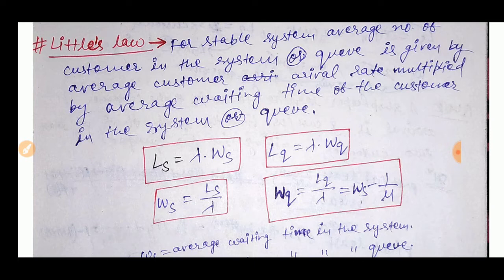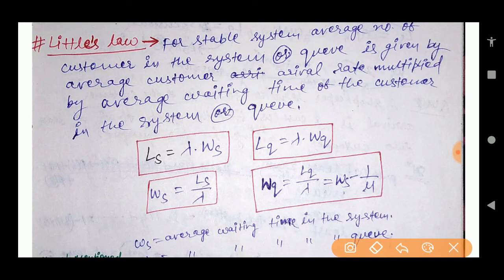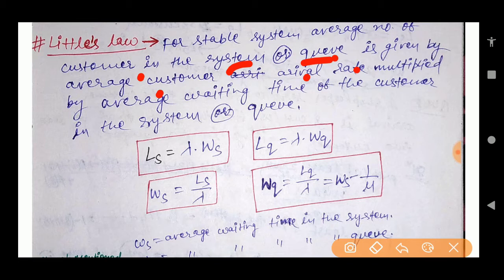Little's Law gives us a simpler way to find the average number of customers within a system or queue. For a stable system, the average number of customers is given by the average customer arrival rate multiplied by the average waiting time of the customers in the system.